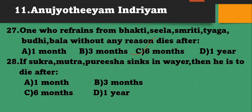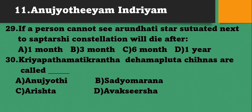If Shukra, Mutra, and Purisha sink in water when put to water, then he is sure to die after 1 month, 3 months, 6 months, or 1 year? He is sure to die after 1 year. If a person cannot see the Arundhati star situated next to the Saptarshi constellation, he will die after 1 month, 3 months, 6 months, or 1 year? Option D - one year. A person who cannot see the Arundhati star will die after 1 year.